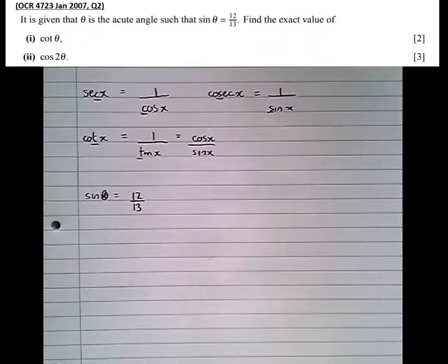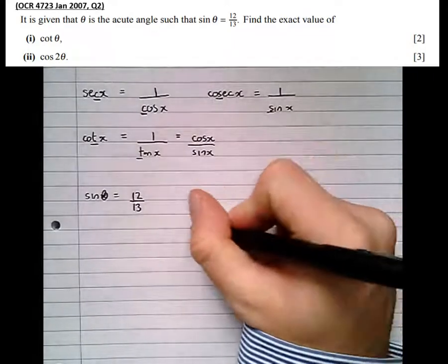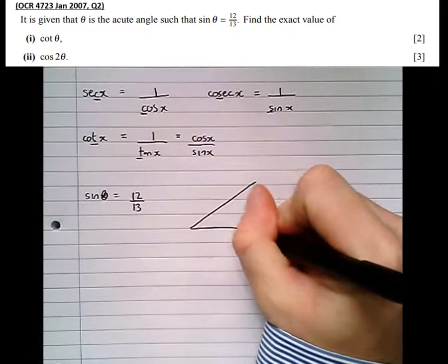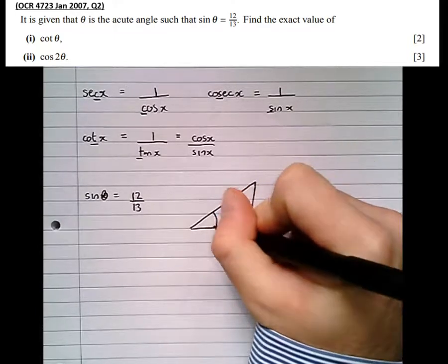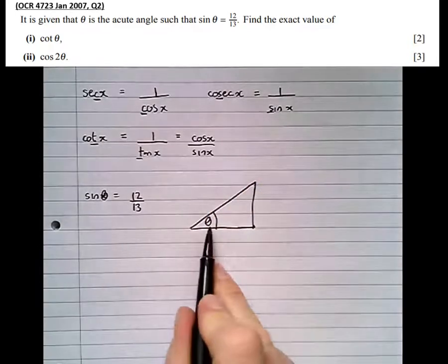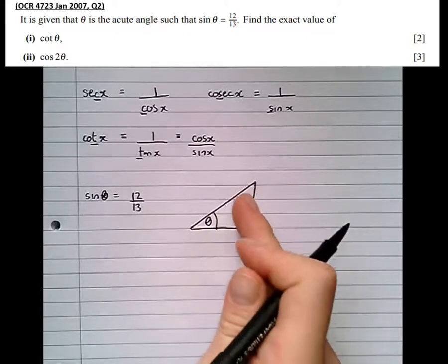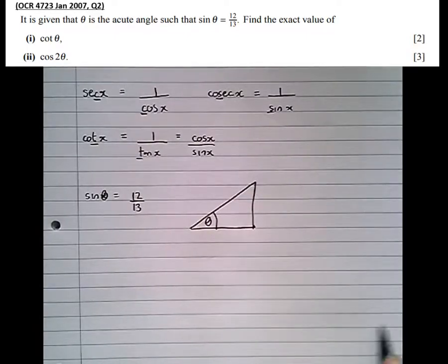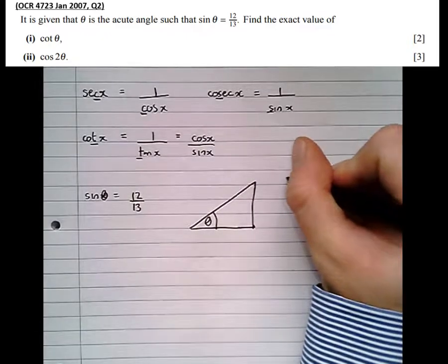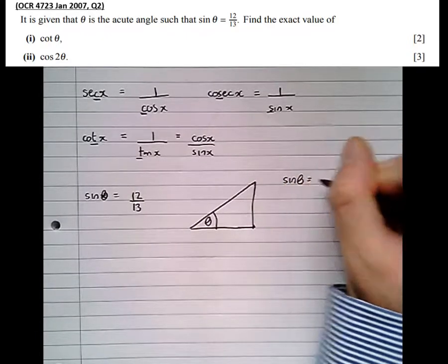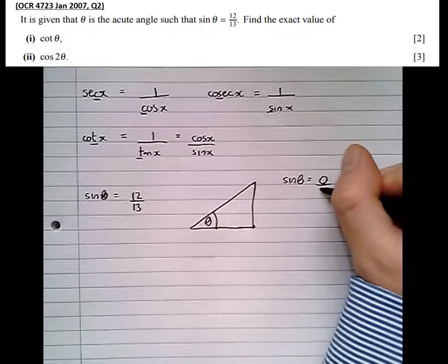Now, given that it's an acute angle, we can model this situation using a right-angled triangle, only because it's acute. In a right-angled triangle, the angle is always acute. If we try to make it obtuse, then it no longer becomes a triangle.